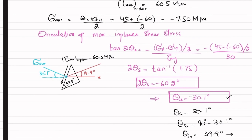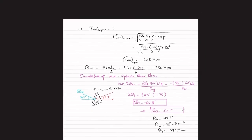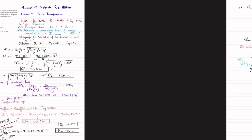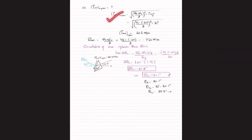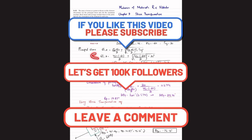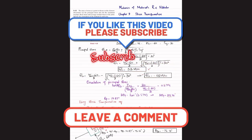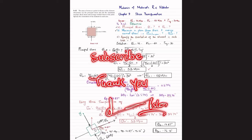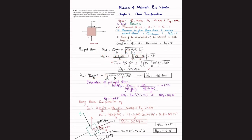That was all about problem 9-15. We calculated principal stresses sigma 1 and sigma 2 and represented their orientation on the element. In part two, we calculated maximum in-plane shear stress and average stress and specified them on the element. I hope you enjoyed this video. If you are new to my channel, please subscribe and press the bell icon for notifications. If you have any questions, ask in the comment section. Thank you for watching.